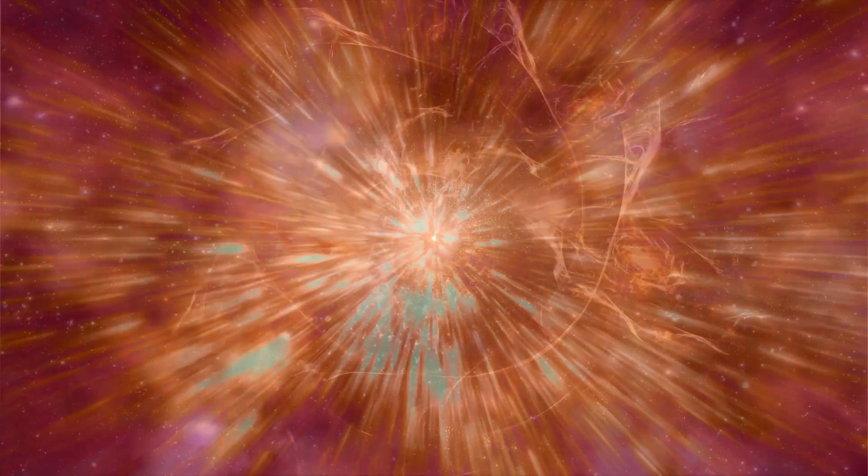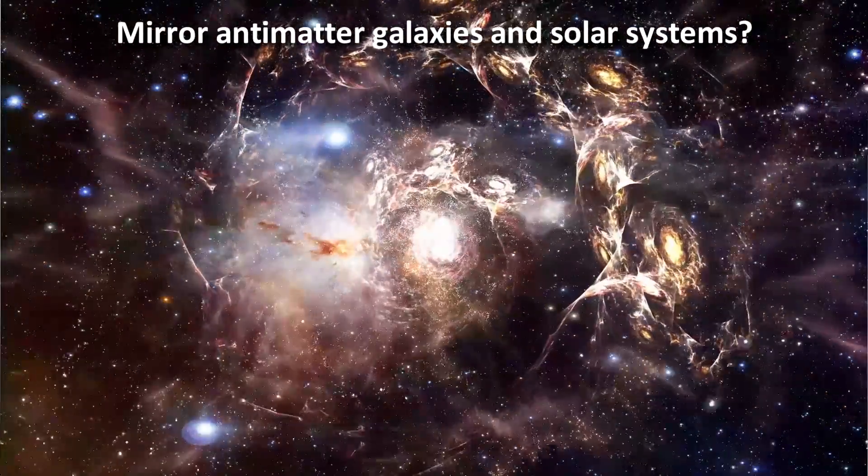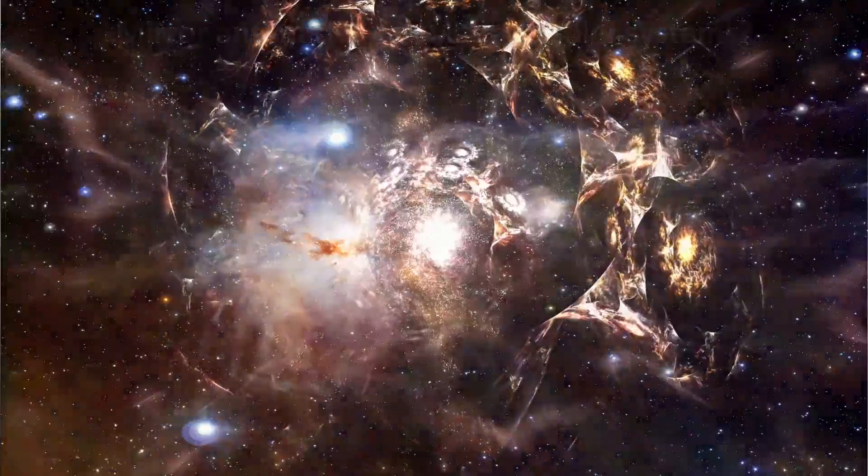Another idea is that perhaps matter and antimatter separated too quickly to have annihilated each other, and that there might be mirror antimatter galaxies and solar systems in distant parts of the universe. But if this was the case, you would expect to see some huge fireworks in the form of high energy gamma rays from the border areas where matter objects encountered antimatter objects. No such high energy signatures are being observed.